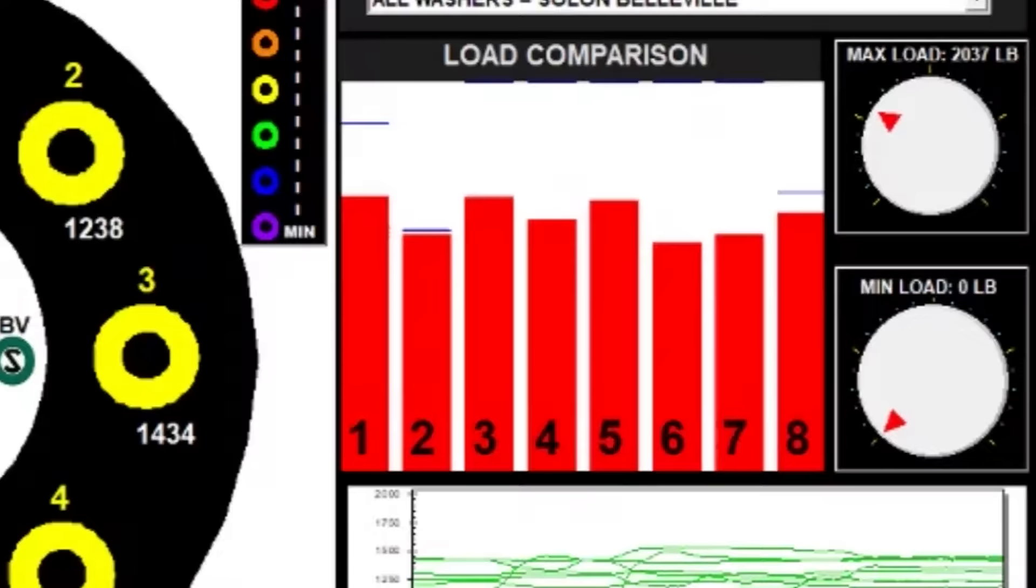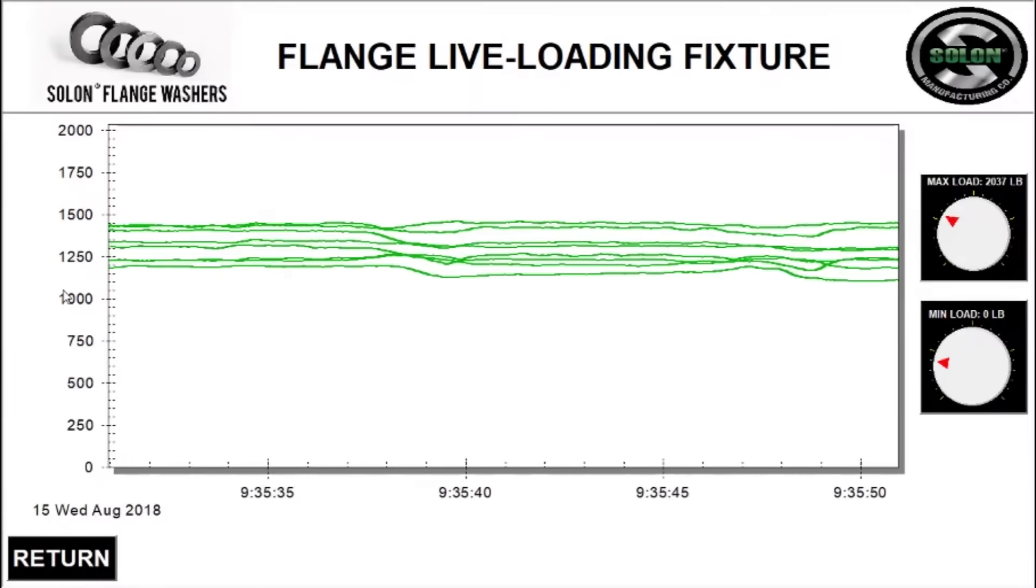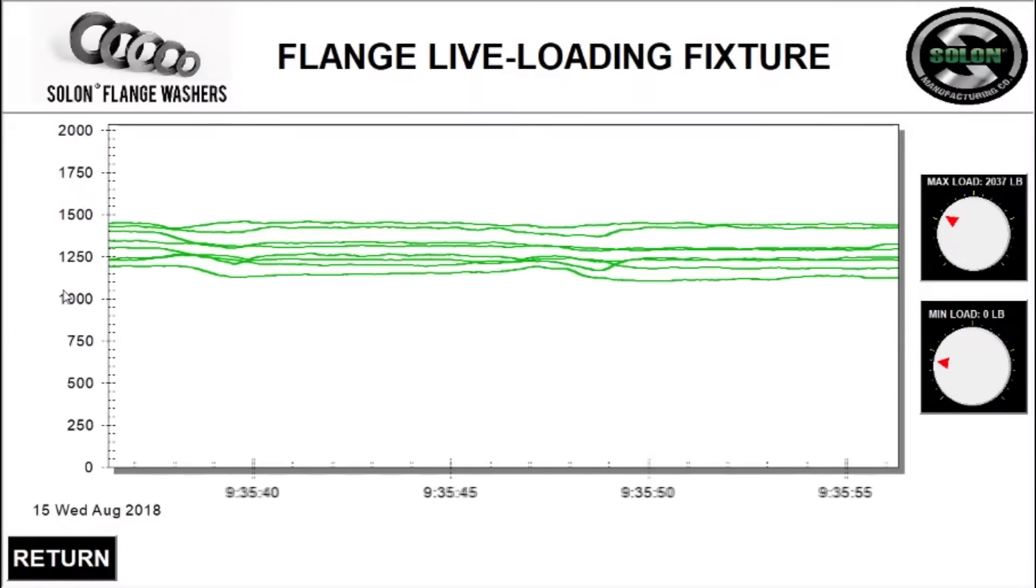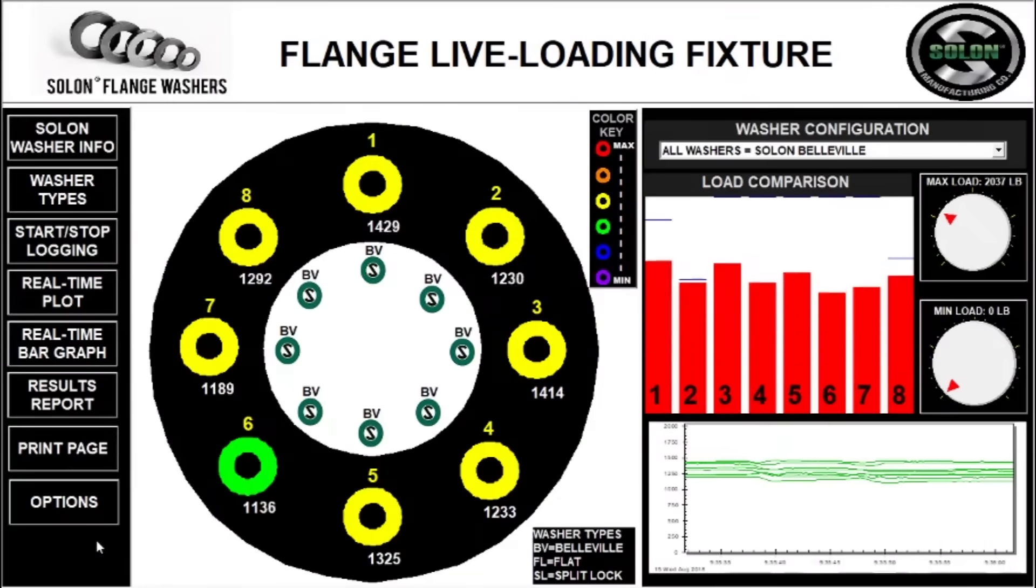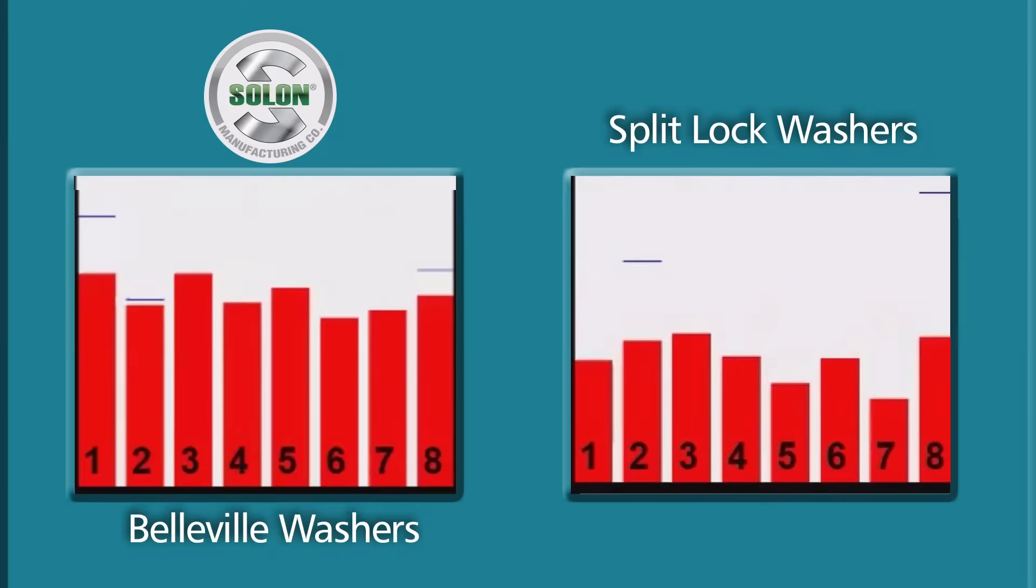In fact, the average load increased 20%, while the standard deviation fell 60%. After two yielding events, the strip chart shows that the drop in preload is much lower. Load after yield was 58% higher when bolts were live loaded with Solon Bellevilles compared to the split lock washers.